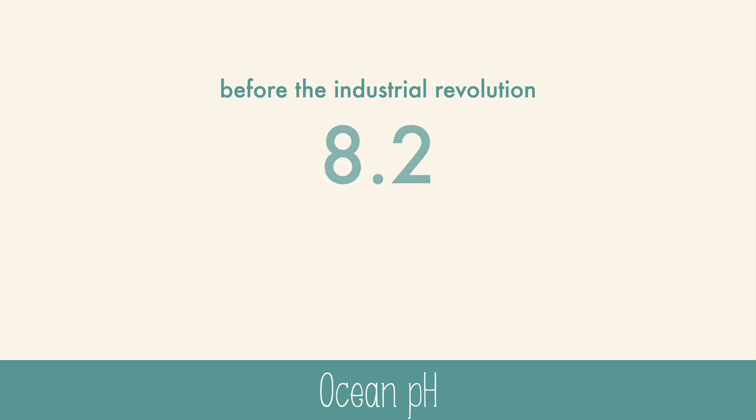Before the Industrial Revolution, the ocean had a pH of 8.2, but it's currently down to 8.1. While that might not seem like much on the pH scale, that's actually 25% more acid.